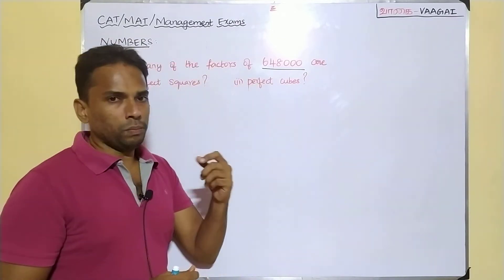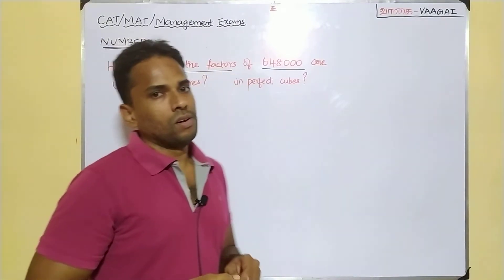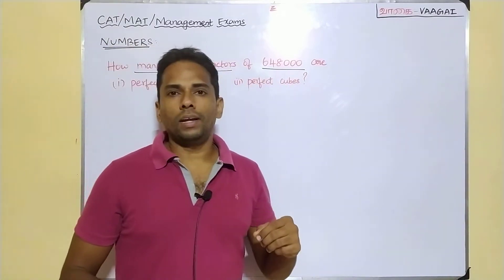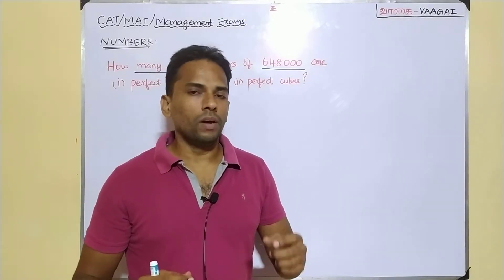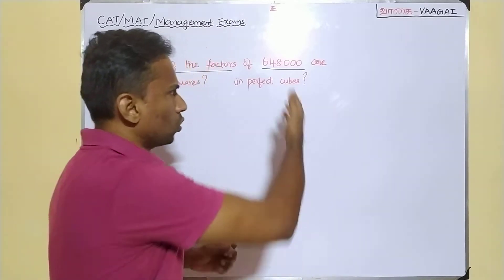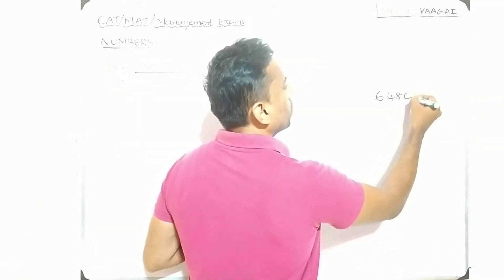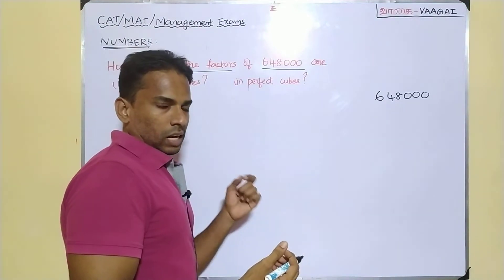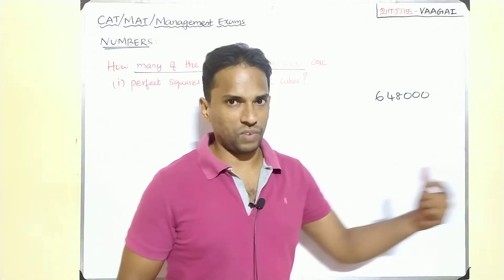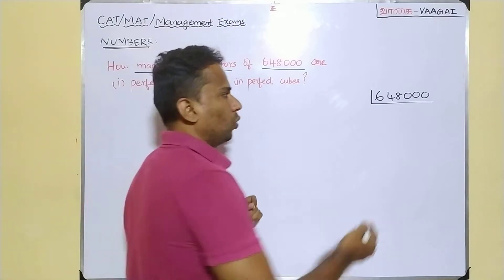Whenever we deal with a problem of finding the number of factors, what we basically do is take our number and prime factorize it. We need to prime factorize our number. So let's directly start prime factorizing. Our number here is 6,48,000. We use only prime numbers to do this factorization process. Let's start from the smallest prime number, 2.